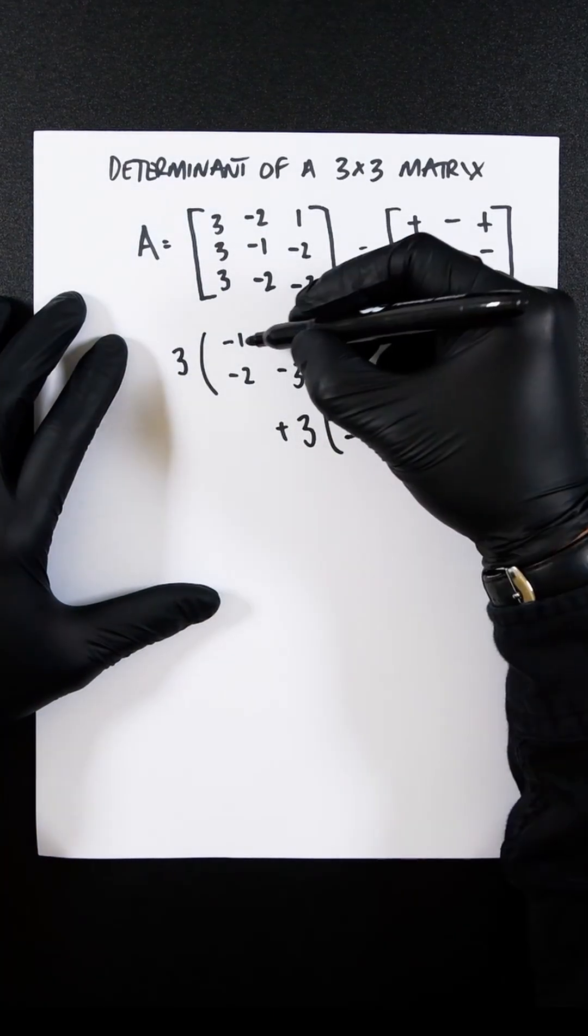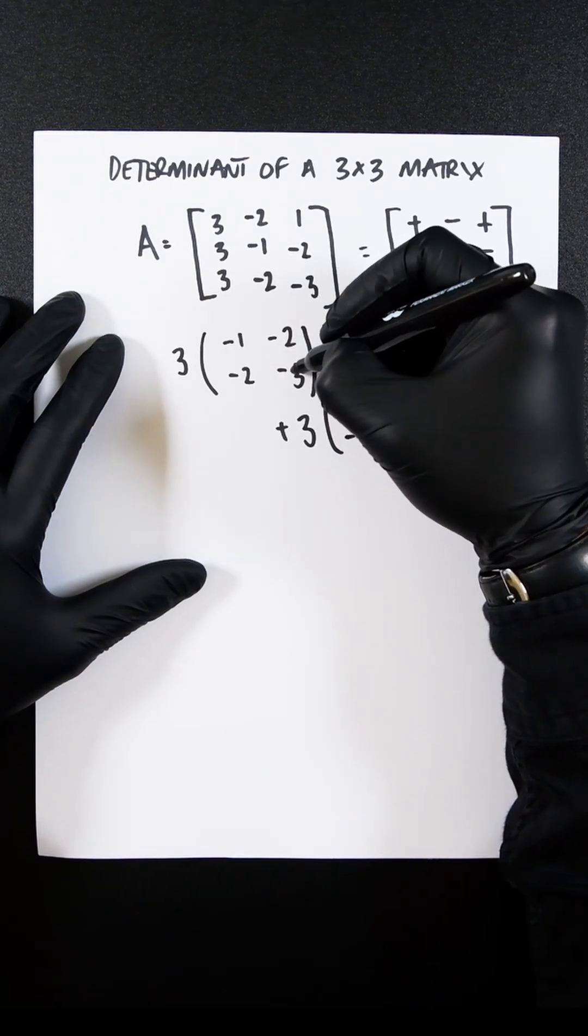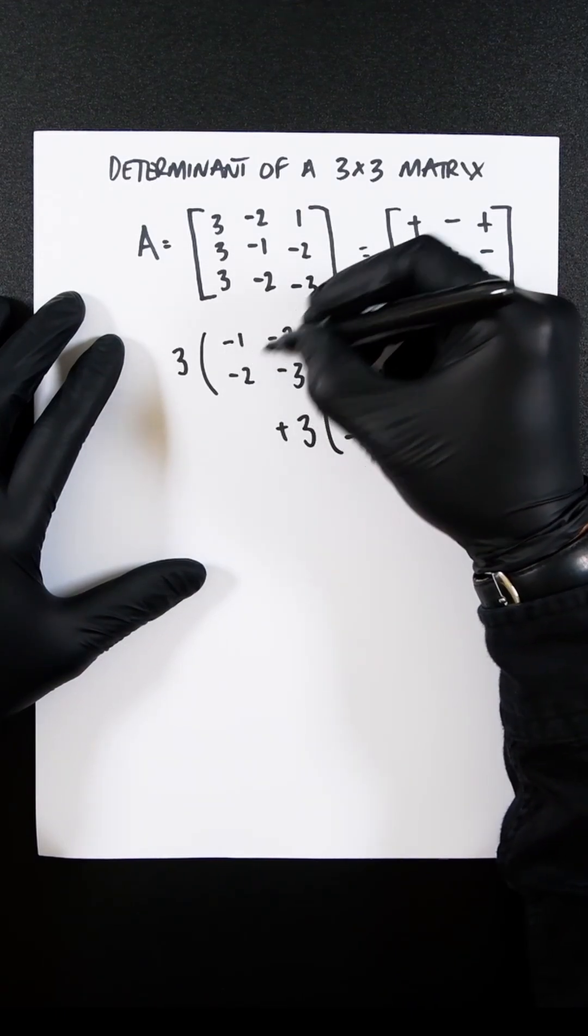Now you're just finding out what the determinant of a 2 by 2 matrix is, and that's going to be this number times this number minus this number times this number.